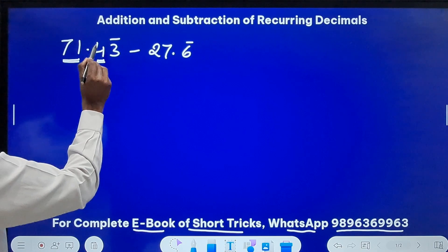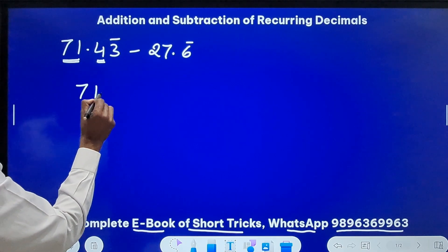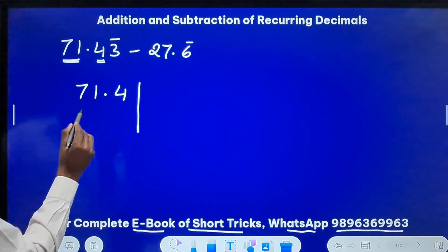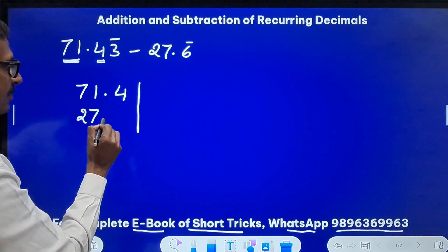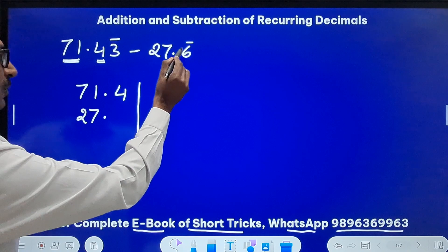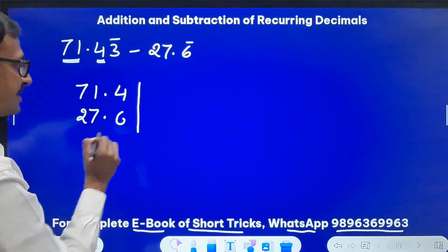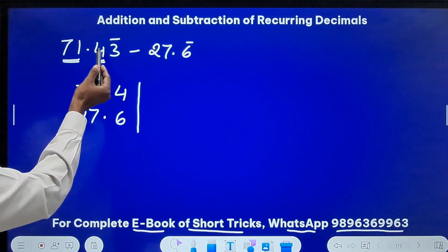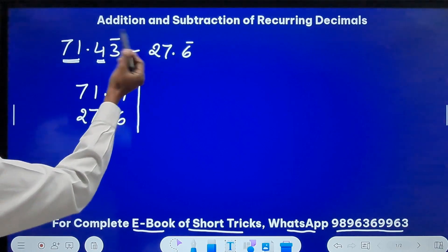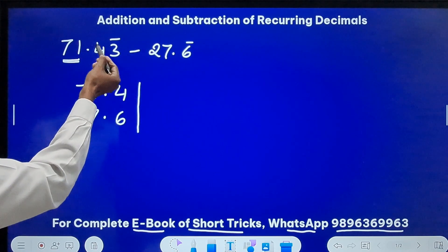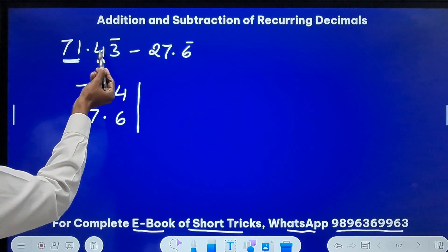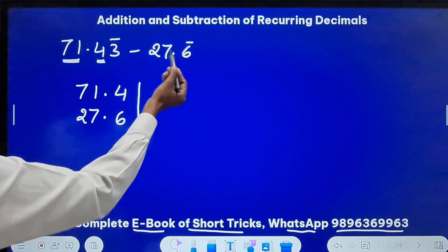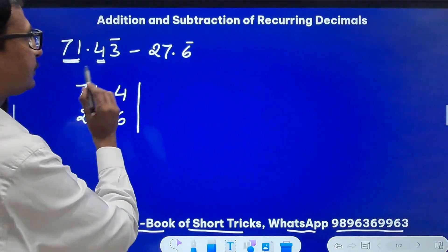So I will write 71.4 on the left and then below this I am going to write 27.6. I will write one digit from this repeating part. I hope you understand why I wrote 4 here, because 4 is not repeating. So we have to check which number contains the greater number of decimal places which are not repeating. So here one digit is not repeating, here everything is repeating, so I have written 4 and therefore I have to take one digit from here also.